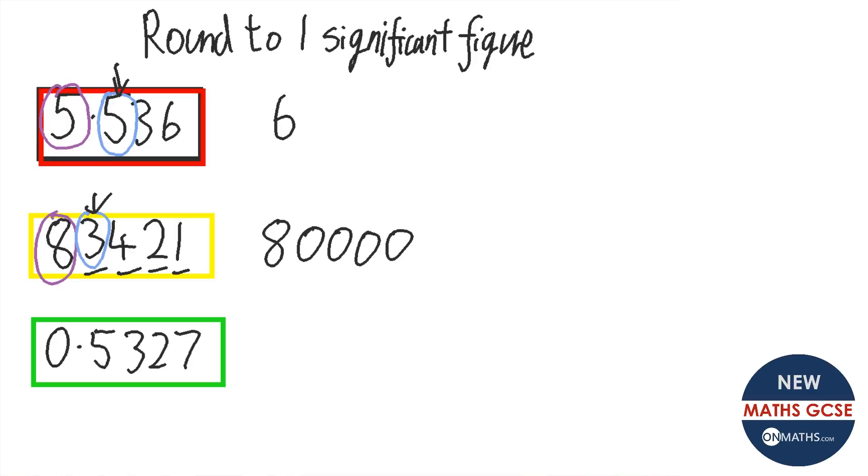Okay and the last question. This 5 is our decider number and that 3 decides whether 5 is our major number and that 3 decides whether that 5 goes to a 6 or not. So it's 0.5 because that 3 is less than 5.